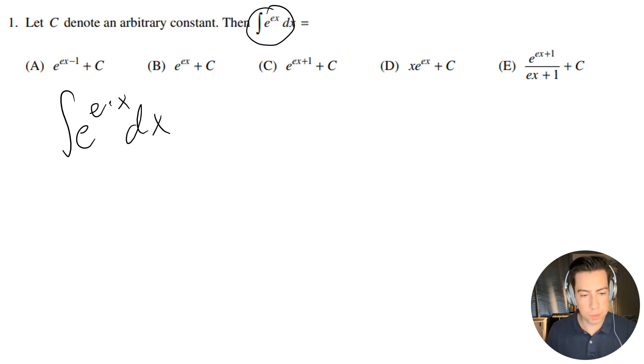So what I'm going to do is just a u substitution. So I'll have u equals e times x, therefore du is going to be equal to e times dx.